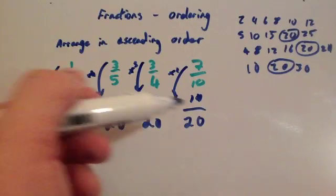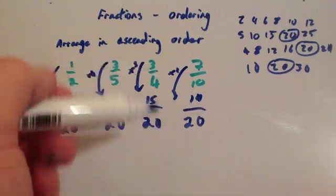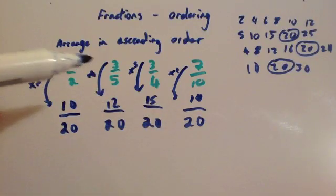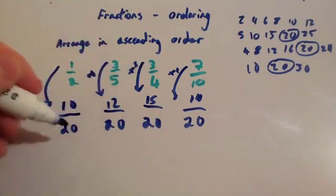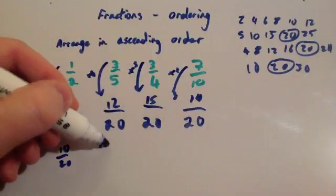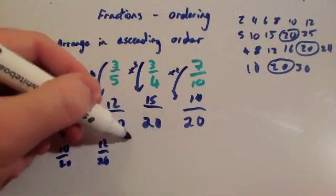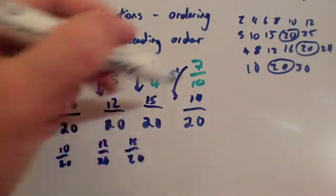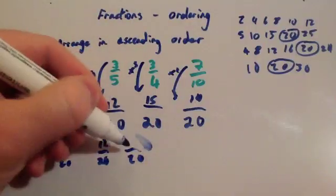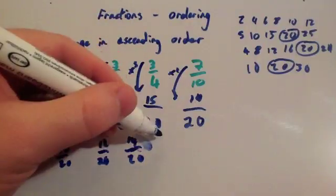So we've got equivalent fractions to the ones we started with, and they all got a denominator of 20. Now it's really easy to put them in ascending order. In ascending order, the smallest is 10 twentieths, the next smallest would be 12 twentieths, then 14 twentieths, and then 15 twentieths.